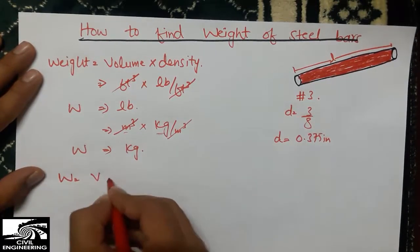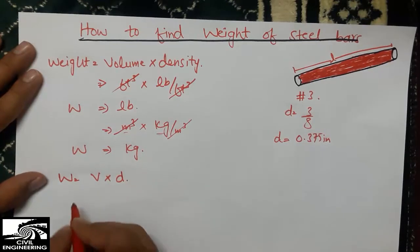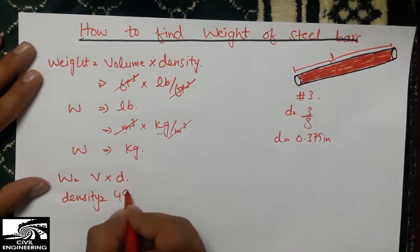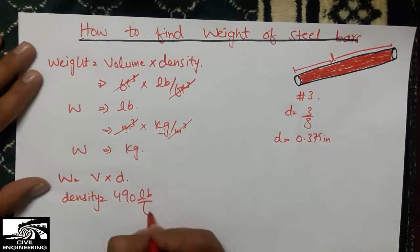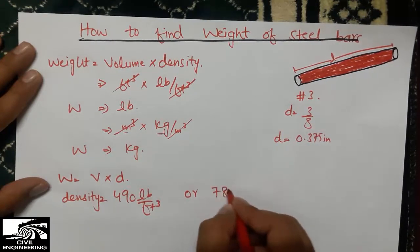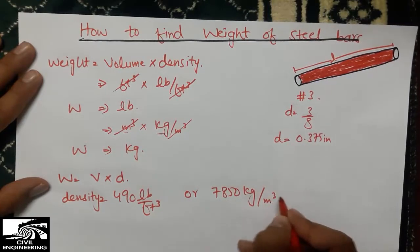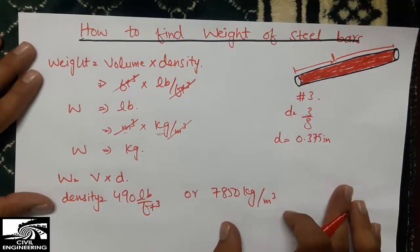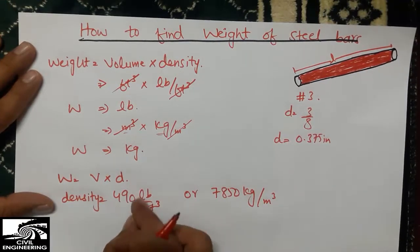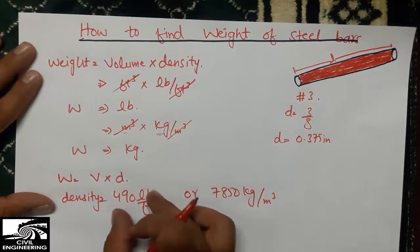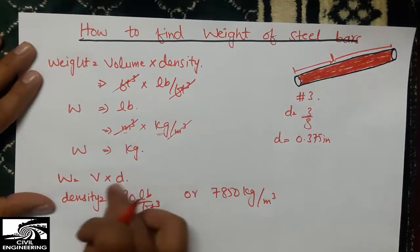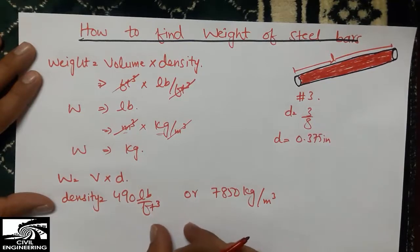We know that weight equals volume multiplied by density. The density of steel is known from experiments: 490 pounds per cubic foot, or 7,850 kilograms per cubic meter. In one cubic foot, the weight of steel is 490 pounds.